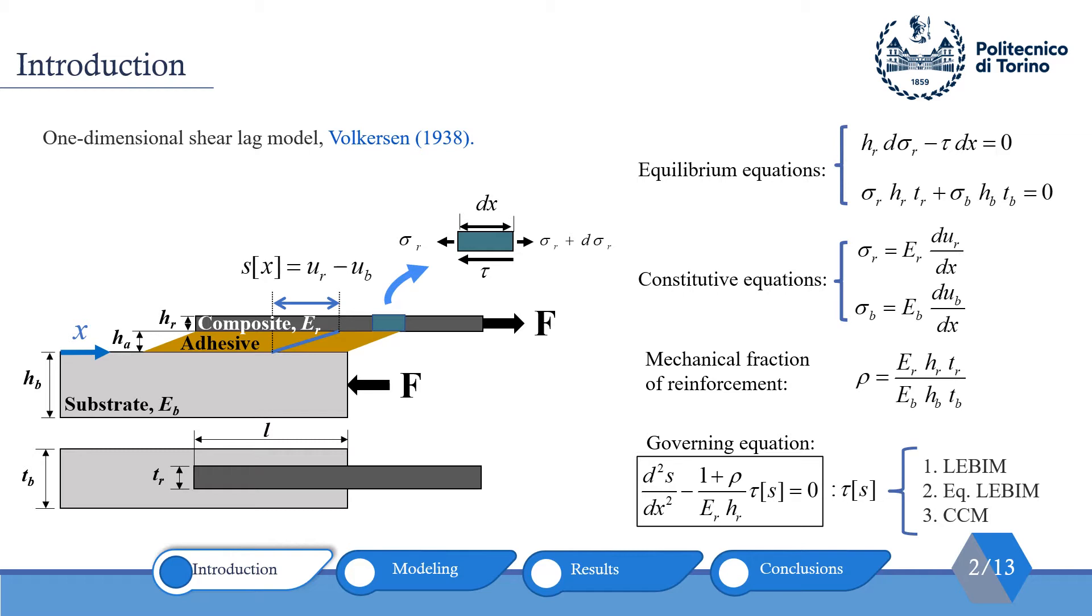To derive the governing equation, we choose an arbitrary element under reinforcement and satisfy the equilibrium for this element. Then we satisfy equilibrium between the reinforcement and block.